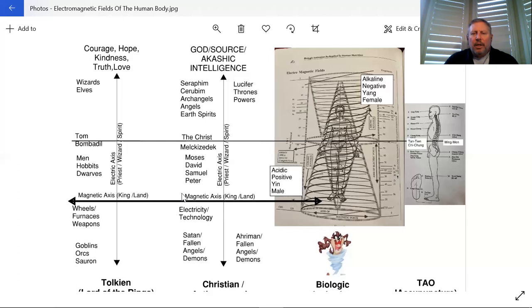Then we have this magnetic axis, which is the magnetic axis of the land. Under this magnetic axis of the land, we have what we call electricity or technology. Steiner talks about this as electricity down here and technology. This is what we call electricity that runs machines, not our bodies, but machines, which is an alternating current.